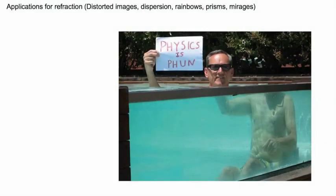Refraction has a lot of possible applications. One of them is just making cool distorted images. Maybe you've experienced this if you're in the bath or in the water and you look down at your arm and it looks like your arm sort of broke, because your arm seems to be at a different angle. That's also refraction.